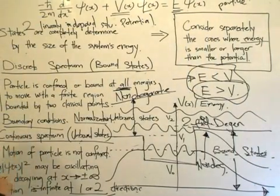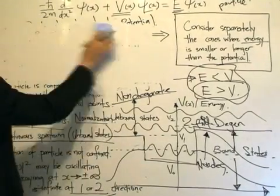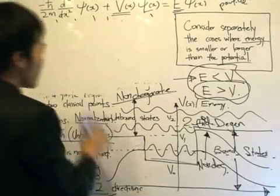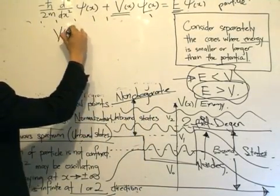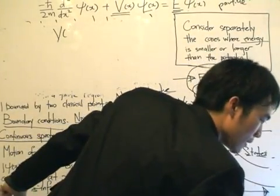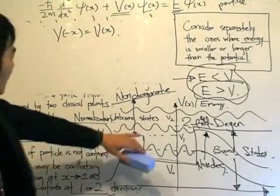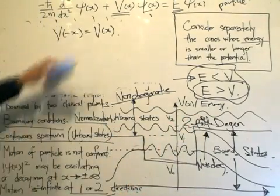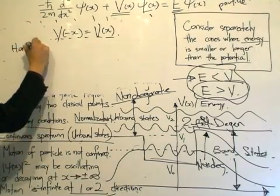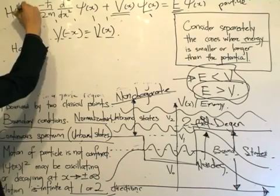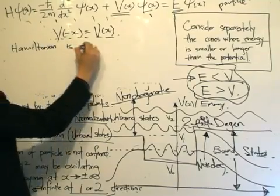Before we wrap up, we need to talk about one last thing: symmetric potentials. If the potential is symmetric, that means V(−x) = V(x). When this happens, something special occurs — the Hamiltonian becomes an even operator. Since x only appears in the potential term, if the potential is even, we can say the Hamiltonian is an even operator.